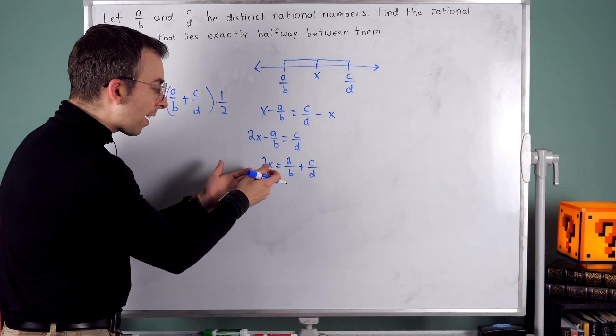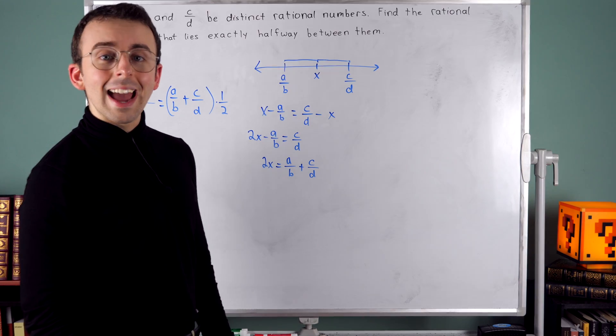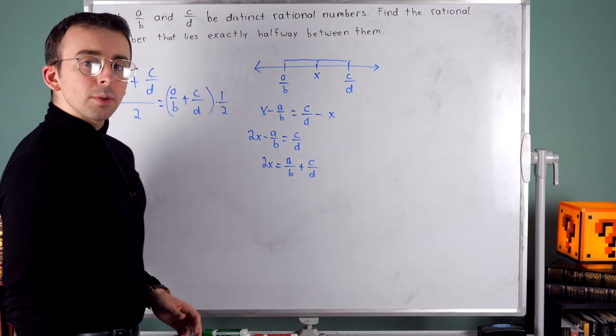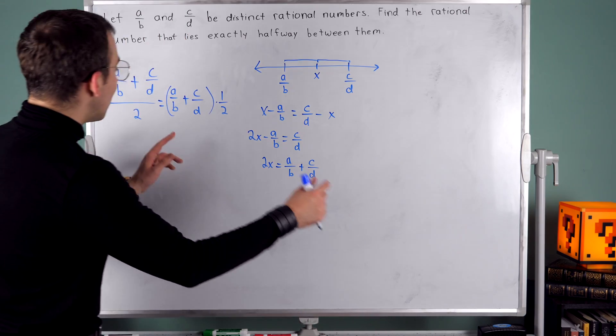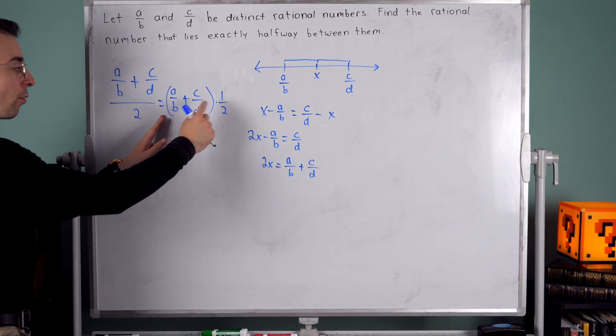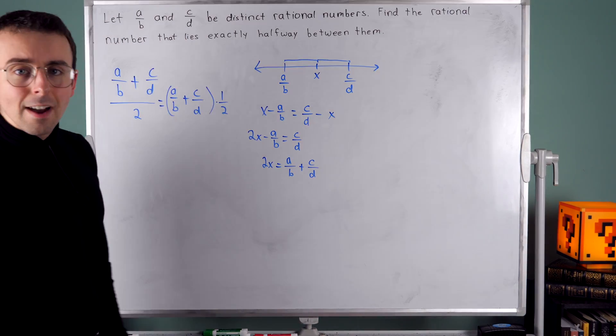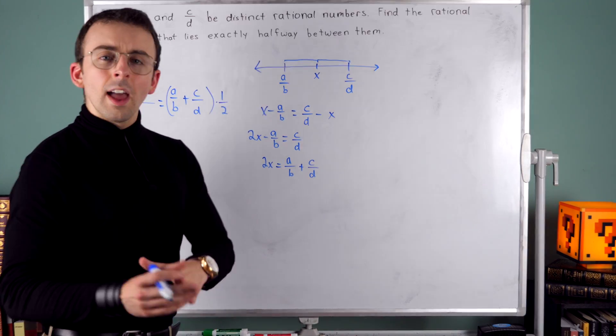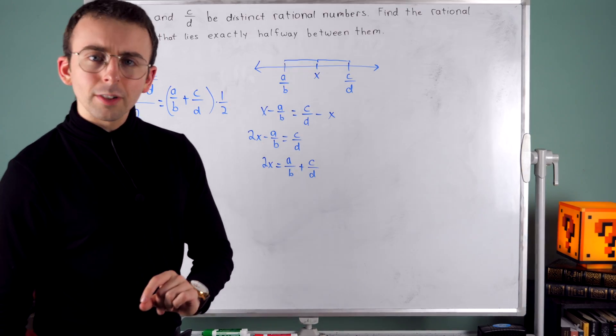Now, I've got this factor of two being multiplied by x that I might want to get rid of. If I divide both sides of the equation by two, I'll be right back where I was before. This times a half. And we could do that. But before dividing by two, I'm going to combine these fractions first.